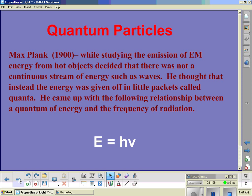So we're going to have to introduce some new material here. Max Planck came along to help figure this out. He had quantum particles. In 1900, while he was studying the emission of electromagnetic energy from hot objects, he decided that there was not a continuous stream of energy such as waves. He thought that instead, the energy was given off in little packets called quantum. He came up with the following relationship between a quantum of energy and the frequency of radiation. So energy was equal to Planck's constant times frequency.